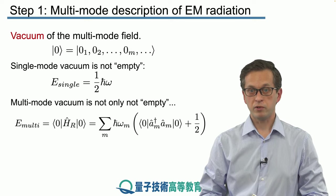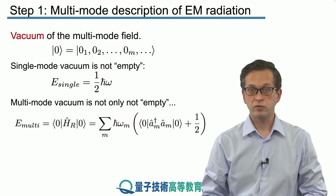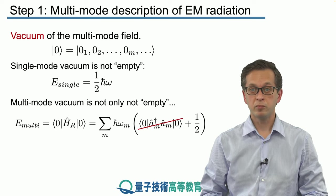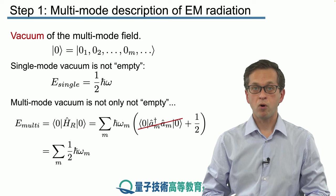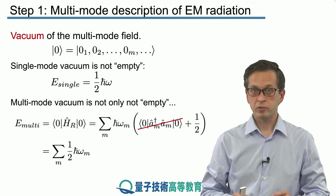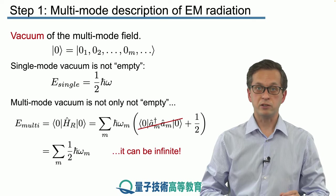We can easily do that because a dagger a acting on vacuum gives us the number zero. However, there is this factor of one half that remains. Therefore, the energy of the multimode vacuum field is given by the sum of one half h bar omega m over all the modes. So in principle, if you have infinitely many modes, the energy of the vacuum is also infinitely large.